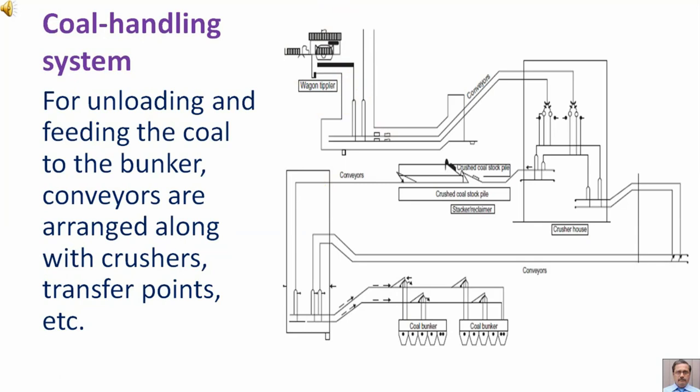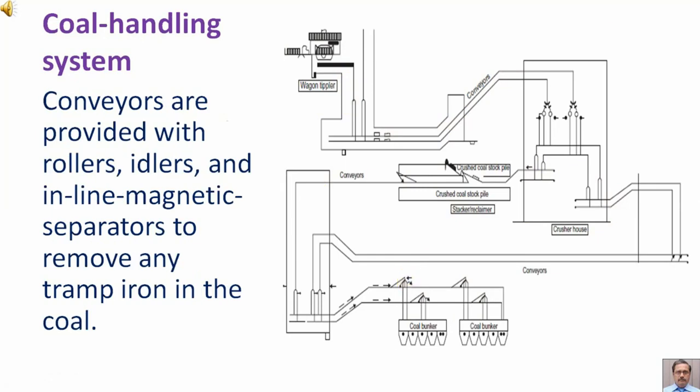For unloading and feeding the coal to the bunker, conveyors are arranged along with crushers, transfer points, etc. Conveyors are provided with rollers, idlers, and inline magnetic separators to remove any tramp iron in the coal.